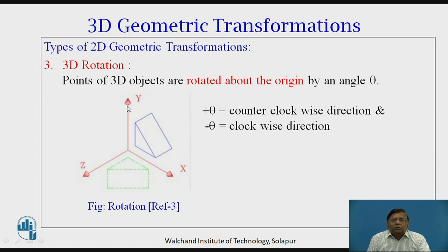Coming to rotation, as indicated in the figure, the given object can be rotated through certain rotation angle say theta about origin. Necessarily, the rotation of the points representing the object happens about the origin. If the angle is given as plus theta, then the rotation is counter clockwise. If that angle of rotation is minus theta, the rotation happens in clockwise direction.